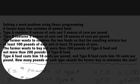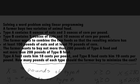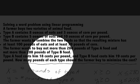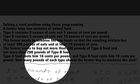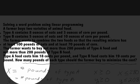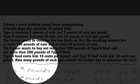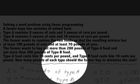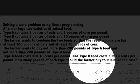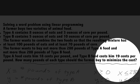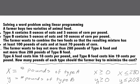We're given information about the cost per pound for type A and type B, and we're asked how many pounds of each type the farmer should buy to minimize the cost.